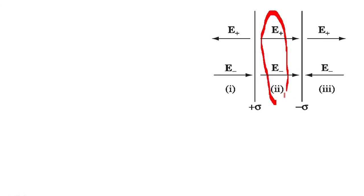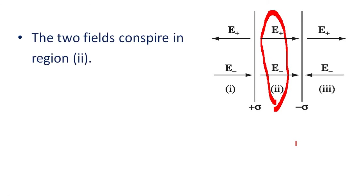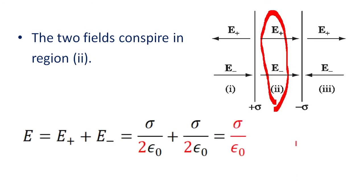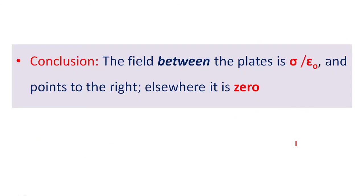In region two, both fields point in the same direction, so they add up. The total field equals E-plus plus E-minus, which is sigma over two epsilon zero plus sigma over two epsilon zero, equal to sigma over epsilon zero. Therefore, the field between the plates is sigma over epsilon zero pointing to the right, and elsewhere it is zero.